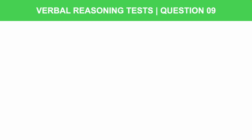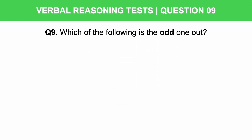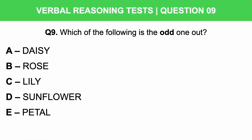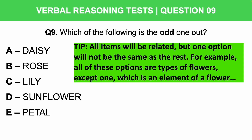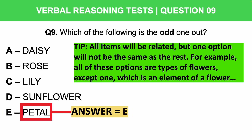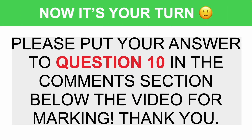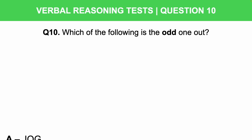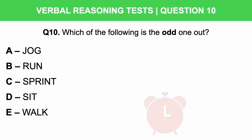By practicing these verbal reasoning questions you are going to increase your chances of passing your Logix assessment. Now let's look at another type of verbal reasoning question: which of the following is the odd one out? A) Daisy, B) Rose, C) Lily, D) Sunflower, or E) Petal. All items are types of flowers except one — 'petal' is an element of a flower, not a flower itself. So the correct answer is E. Now try question 10: which of the following is the odd one out? Jog, run, sprint, sit, or walk. You have 12 seconds.